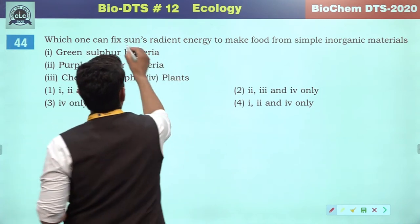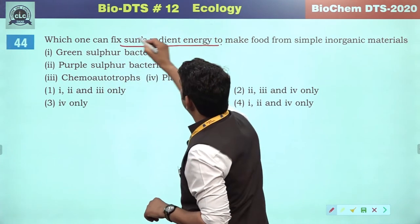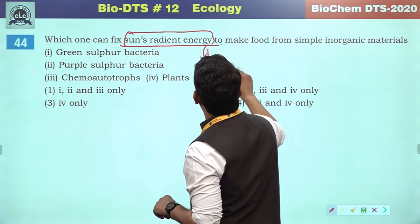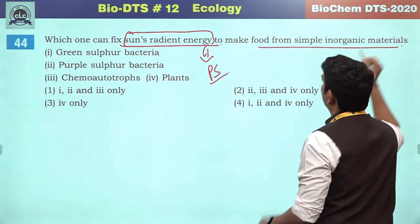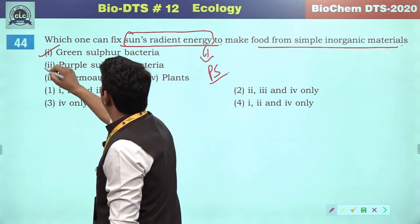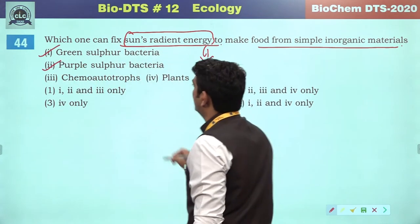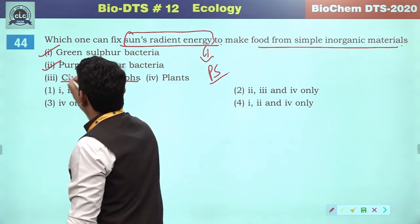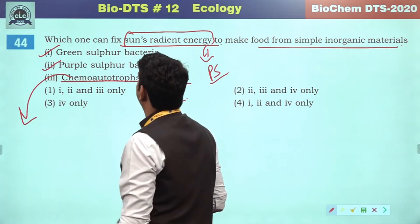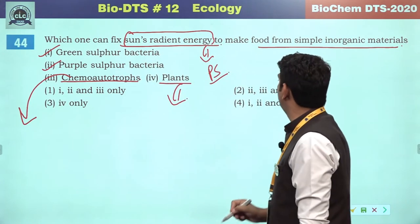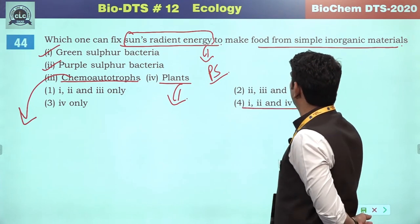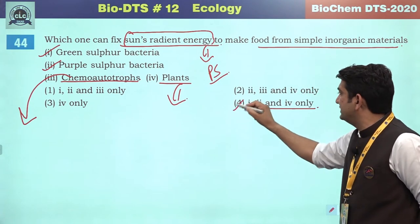Which one can fix the sun's radiant energy? Photosynthetic activity is required to make food from simple inorganic material. Green sulfur bacteria and purple sulfur bacteria are both photosynthetic. Chemoautotrophs cannot be counted here. Plants definitely do this. So our correct references are first, second and fourth — the fourth will be the correct answer.